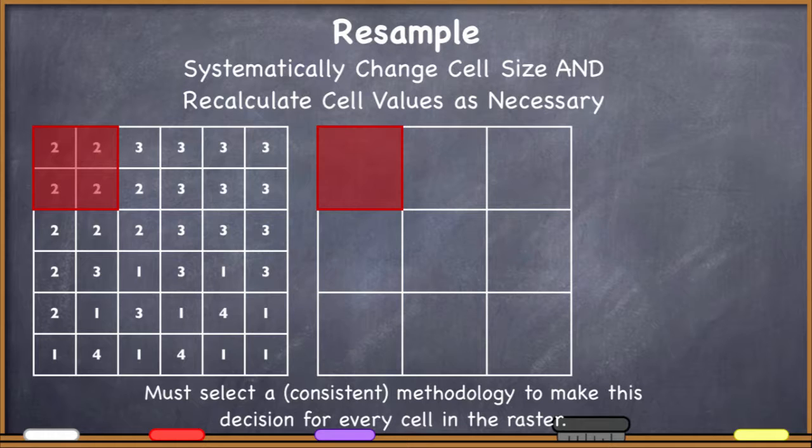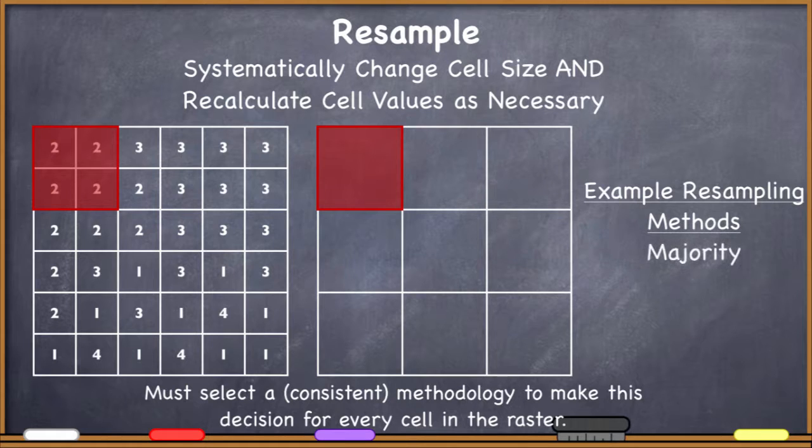If I'm going to perform a resampling operation like this, I'm going to have to choose what methodology I'm going to use to enter a new cell value into the output cell. There are a few different methods that I could use to resample this cell. We don't have time to go over all of them, but for instance, I might use majority. I might say whatever the majority number is in those four cells, I want to use that value to put in the new cell.